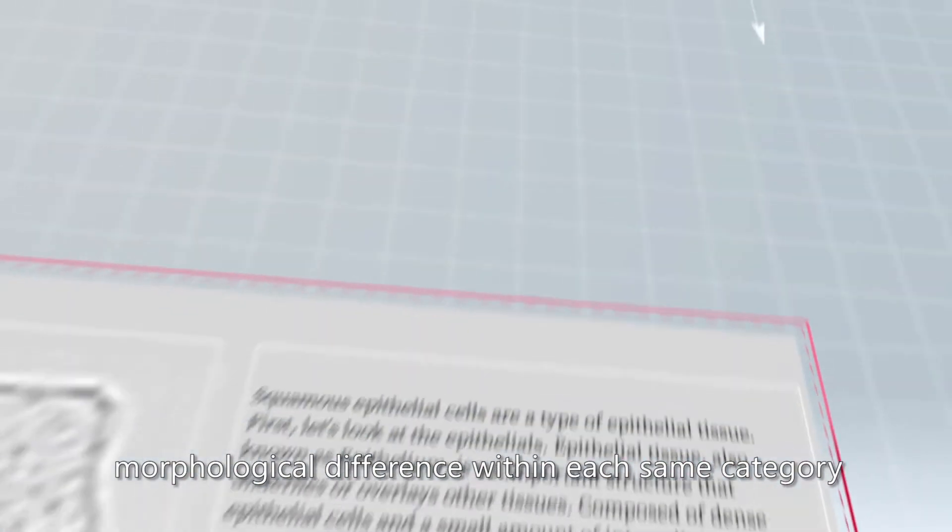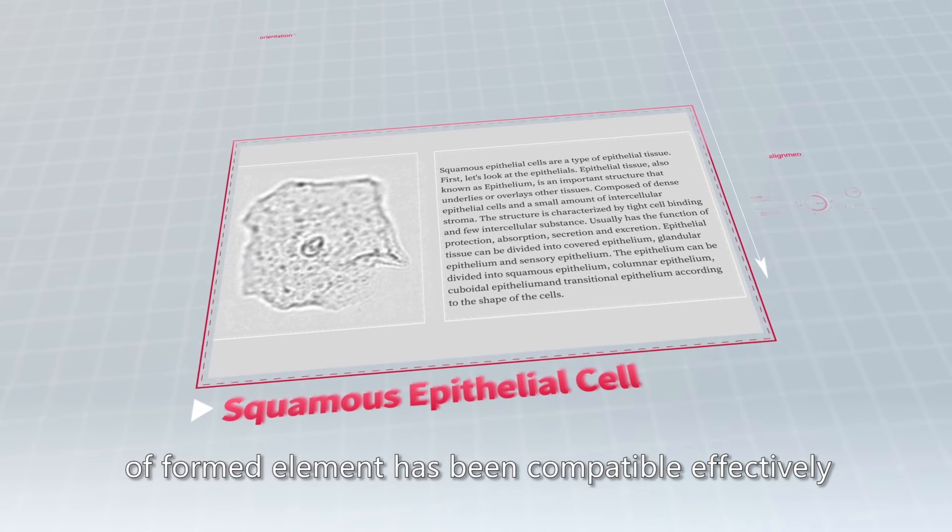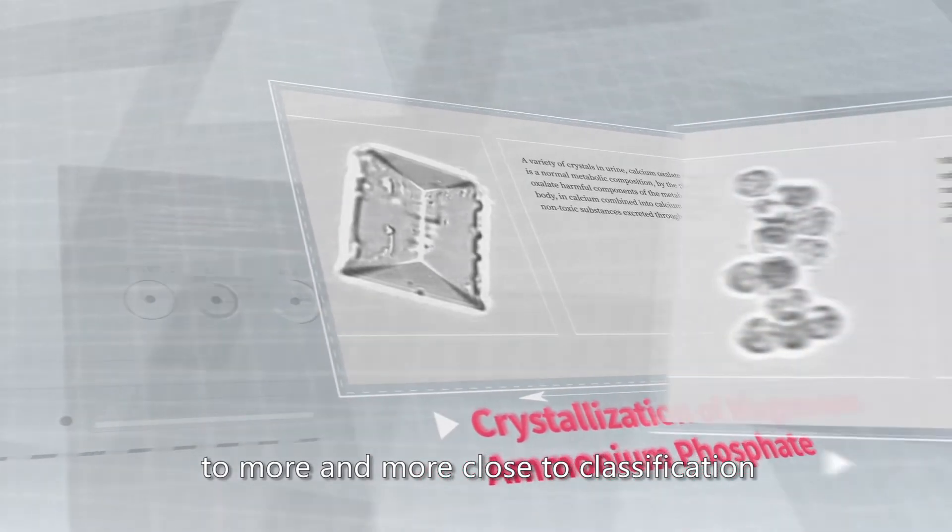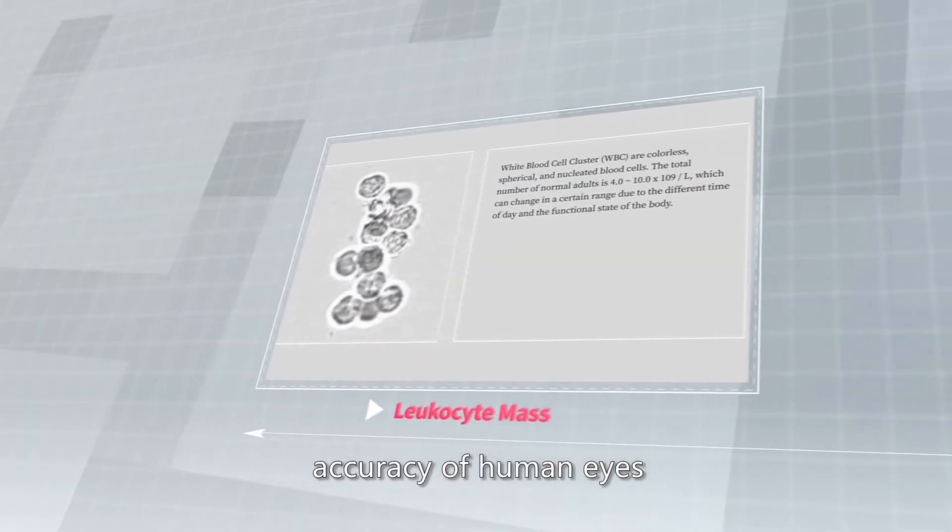Innovatively, morphological differences within each same category of formed element have been effectively accommodated, improving the classification accuracy to more closely approach the classification accuracy of human eyes.